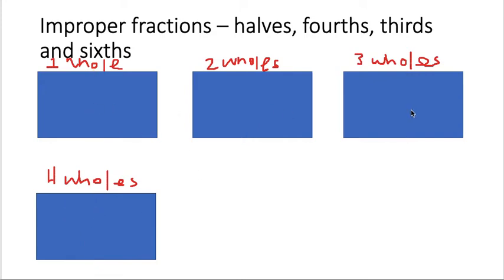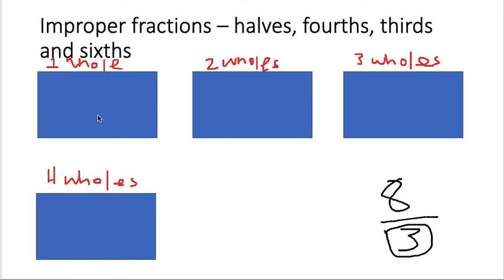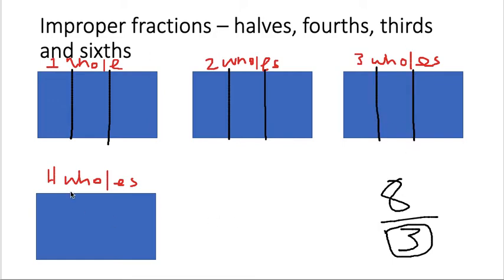Now let's try thirds. Let's say, for example, I had to find out where eight thirds would go. Eight thirds. I know this isn't proper because eight, the numerator, is larger than the denominator. When it's three thirds, I already know it's going to be one whole. So this number three, the denominator, is telling me how many equal parts each whole should be broken up into. So let me do that first — I'm breaking each whole into three equal parts. Each one of these is one third, one third, one third.